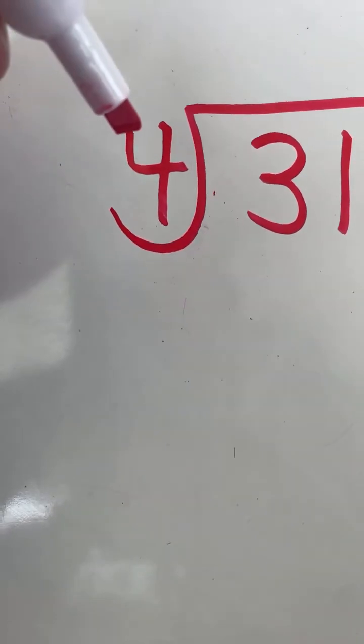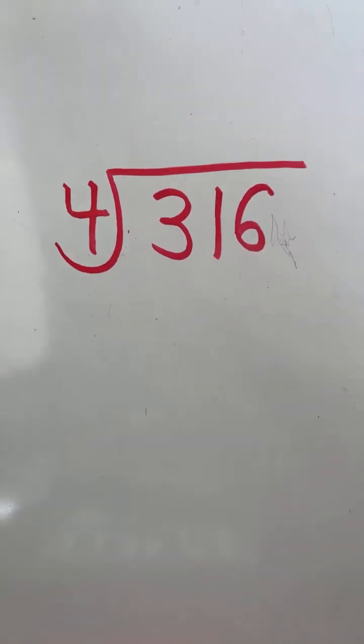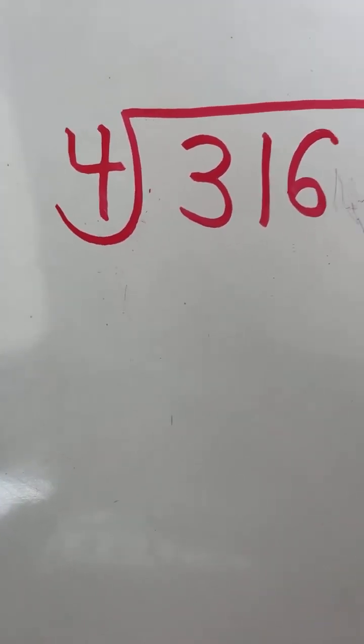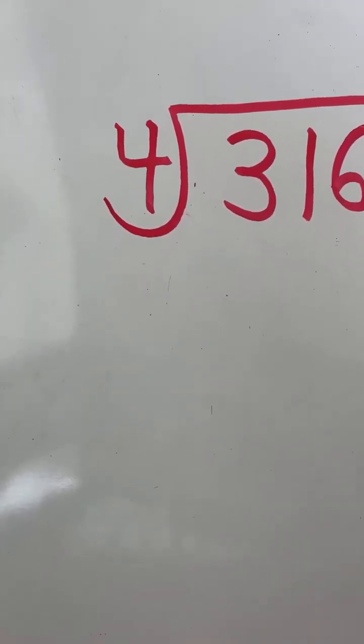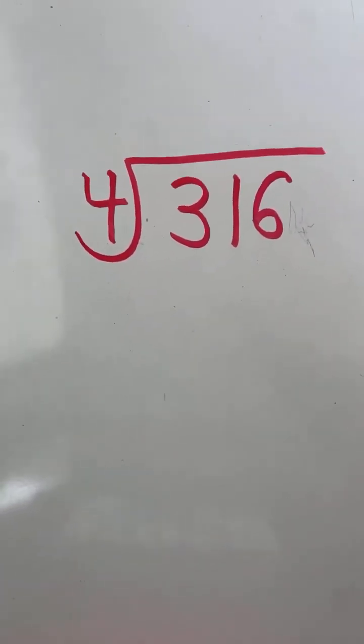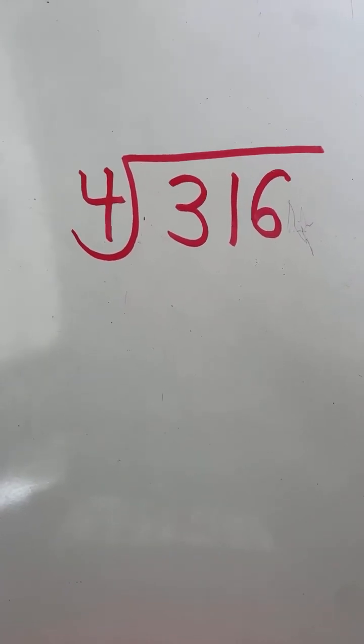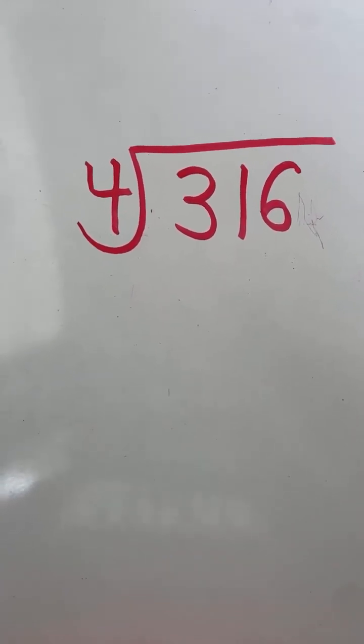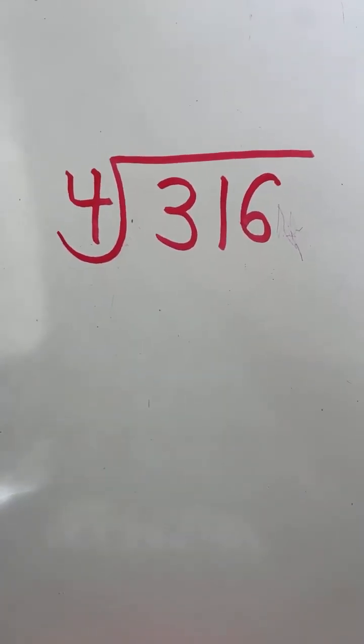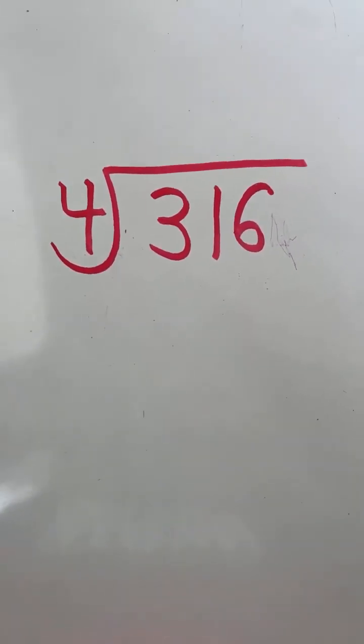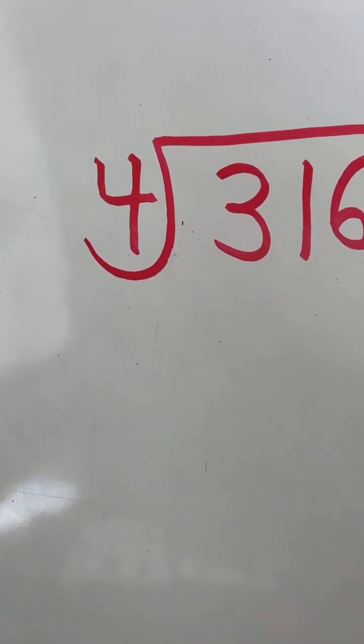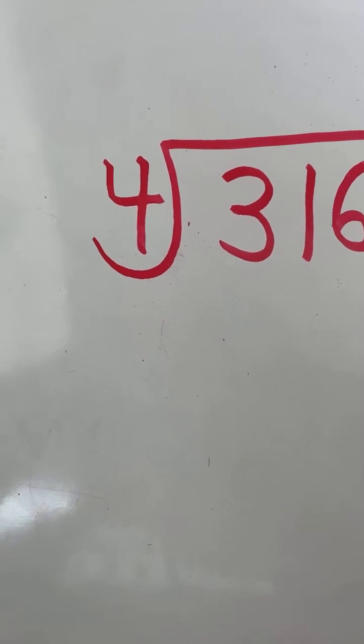Starting out, we have to figure out how many groups of 4 go into 31. Now, if you know your division facts, this is pretty basic, but if you don't know your division facts, there's a way to figure this out that I'm going to go over. We need to figure out how many groups of 4 go into 31, how many times 4 goes into 31.